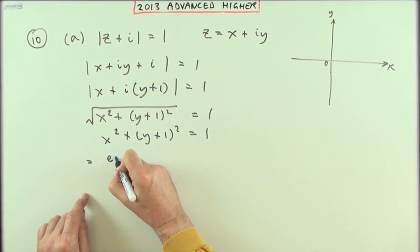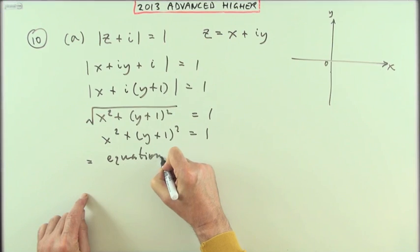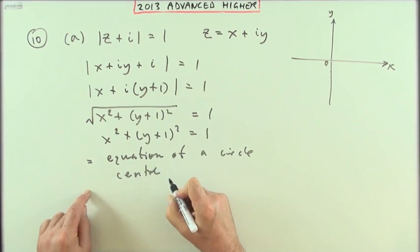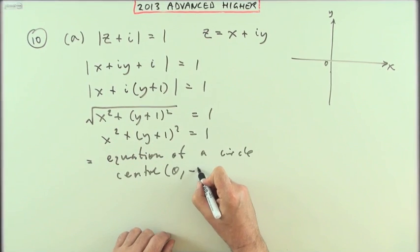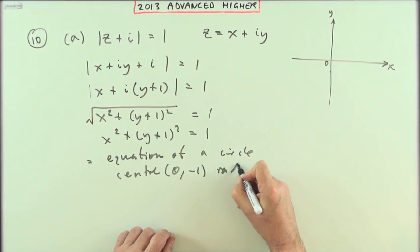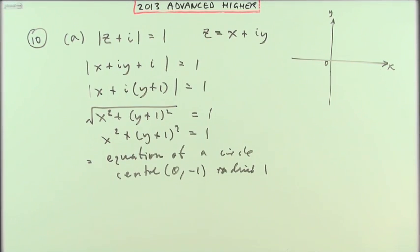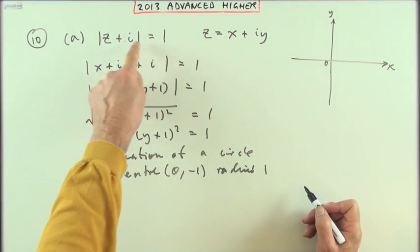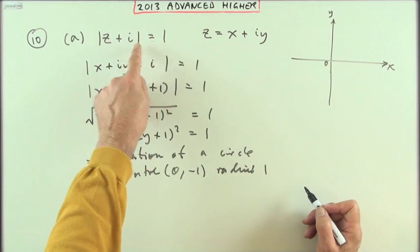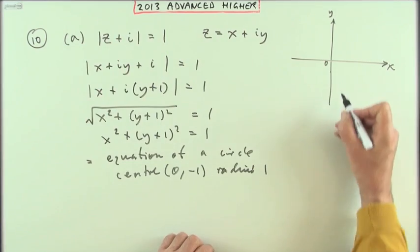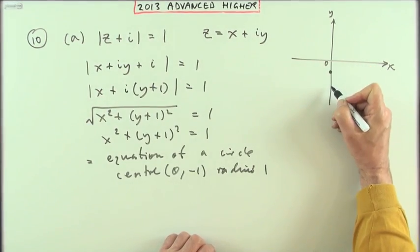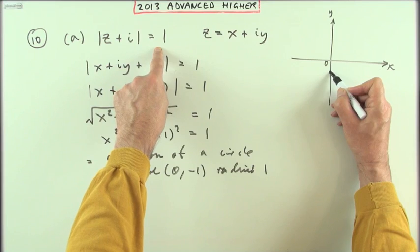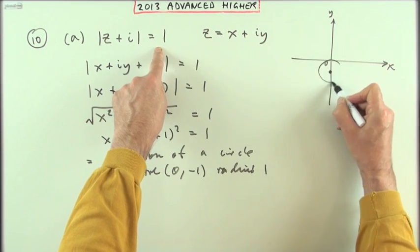So x squared plus (y+1) squared equals one. That's the equation of a circle centered at x minus zero and y minus negative one with radius one. It said describe rather than show, but I knew that to begin with—z is always this distance away from that point which was being subtracted, negative i or negative one. Where are all the positions you can be if you're only allowed to stay one away from negative i? That'd be in a circle round about it.